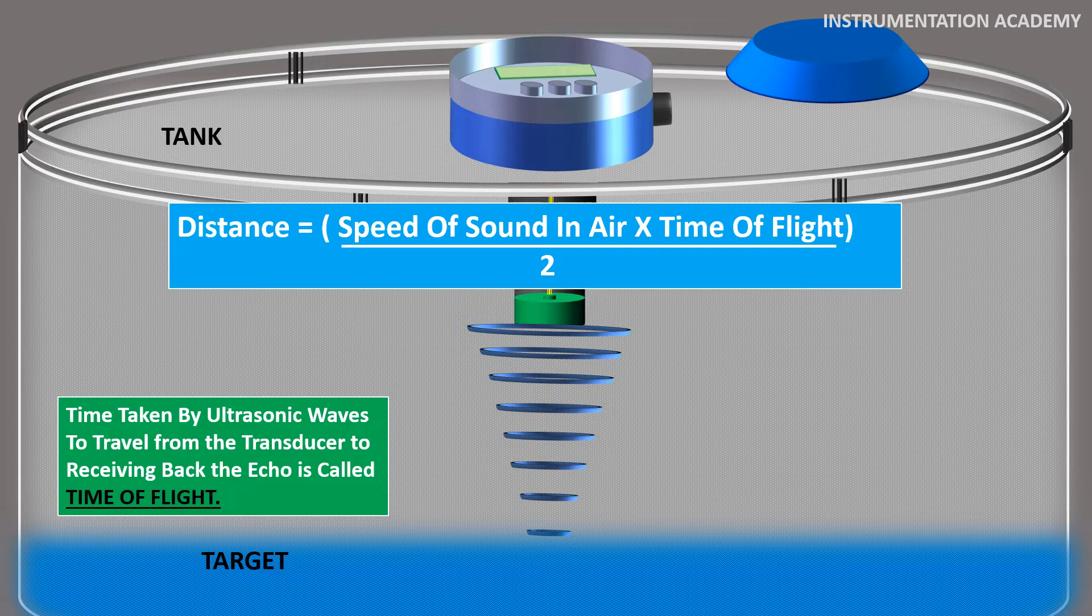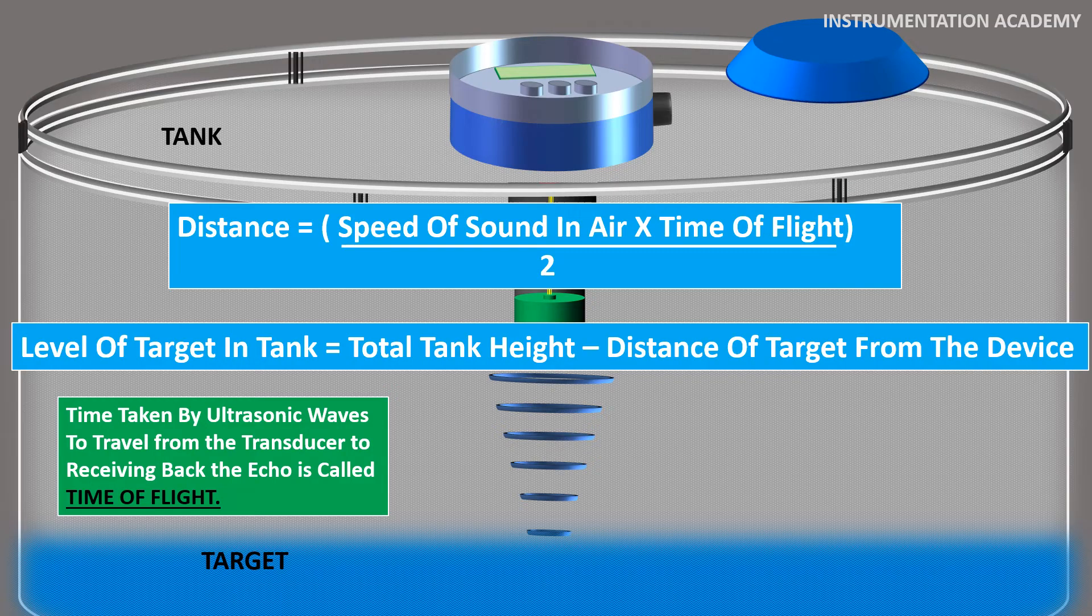Once the transmitter is programmed with the height of the tank, the level of target in the tank is calculated by the microprocessor using the formula: Level of target = Total tank height - Distance of target from the device.